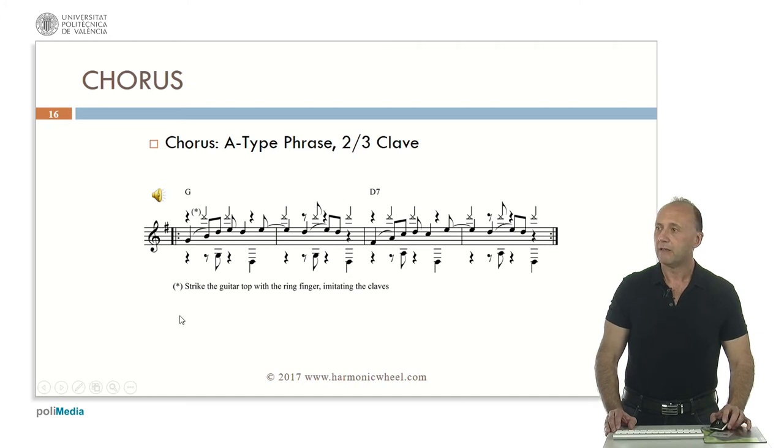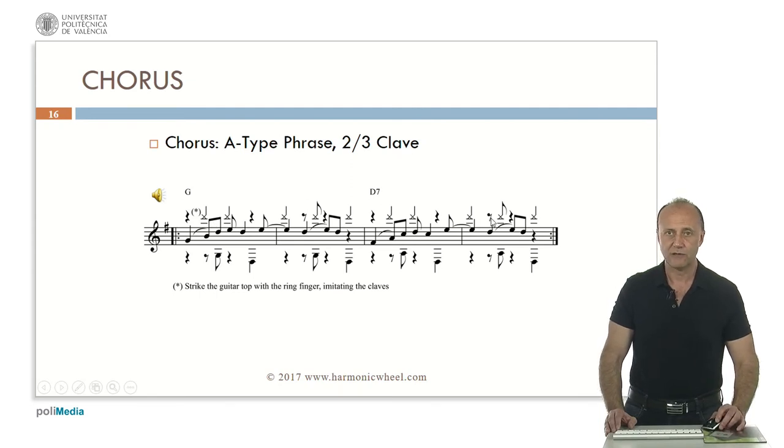We will play it by striking the guitar top with the ring finger. So here we have a chorus which is an A type phrase. One chord every two measures. Then in the upper part of the staff we can see the 2-3 clave rhythm. Then the melody and the typical bass. In this case we didn't include any chord. Let's listen to the chorus.